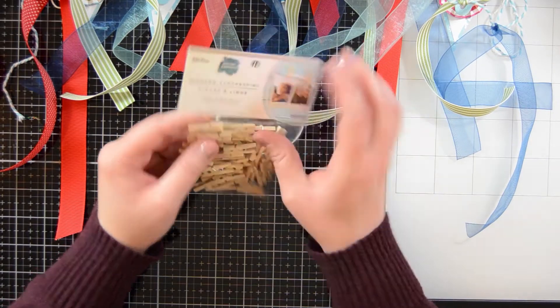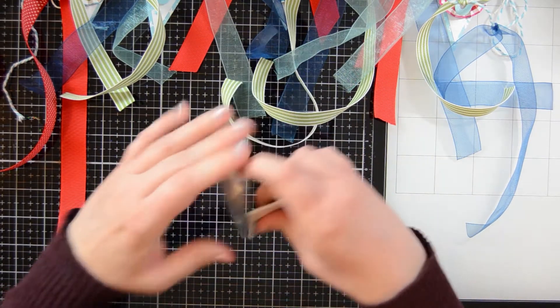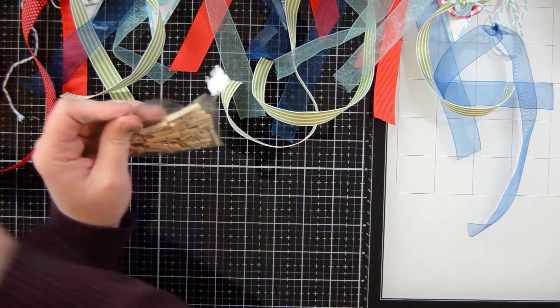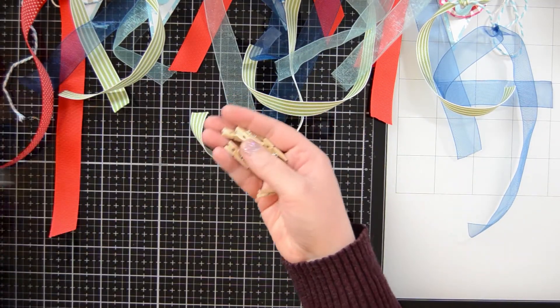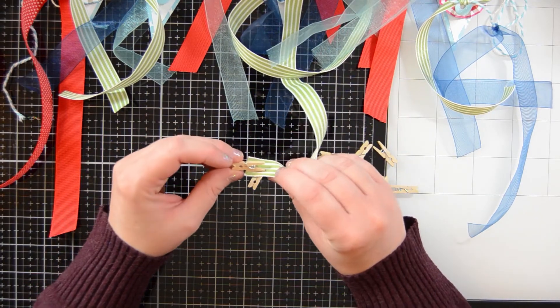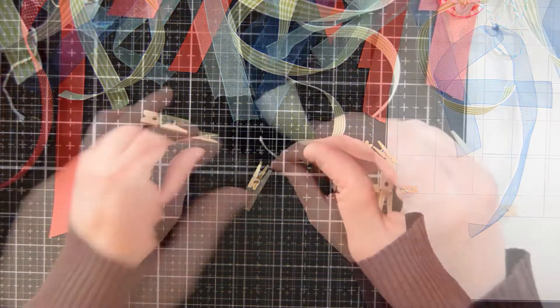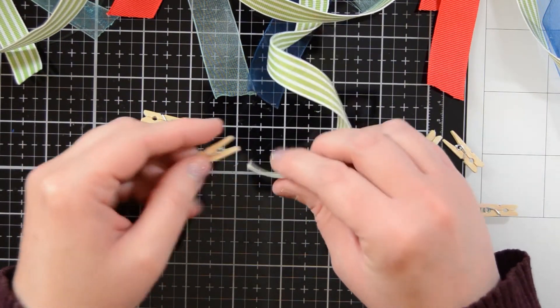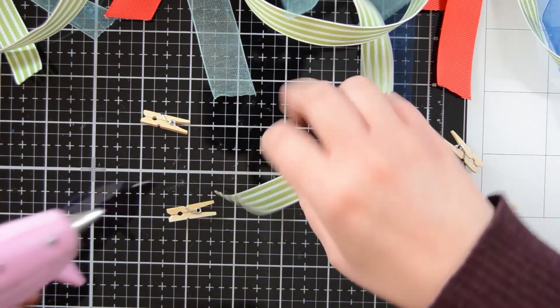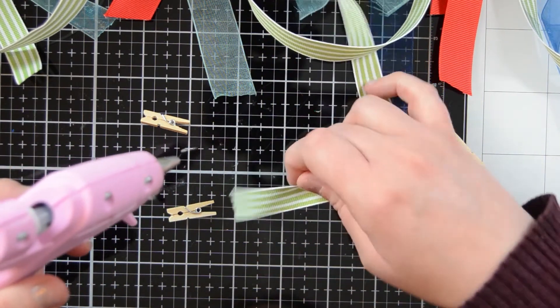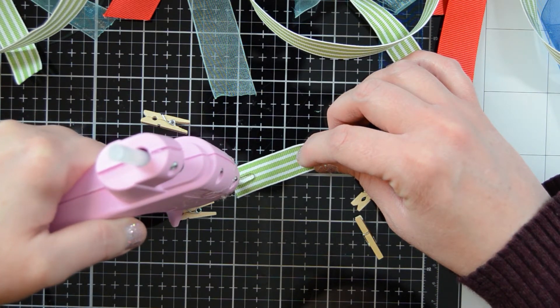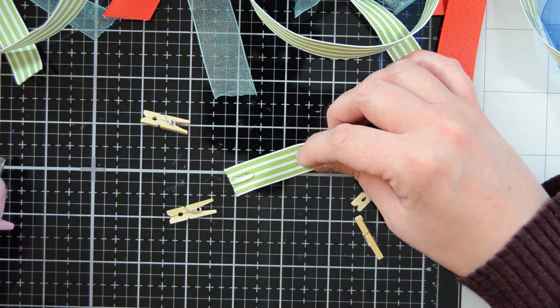So the last step in this whole project is to take some little mini clothespins here and adhere them to the bottom of the ribbons. And this is what we'll clip onto our cards. So they're just going to glue on right like that. I'm going to go back to my trusty old hot glue gun to get that done. And I'm just going to end up doing a little, just a little strip of it, just the length that I need it to be. And then I will lay down my clothespin.